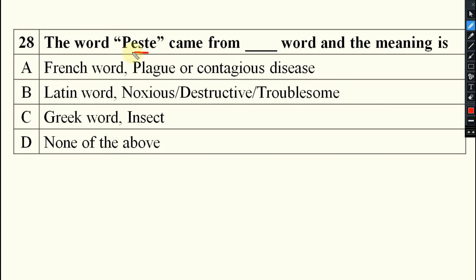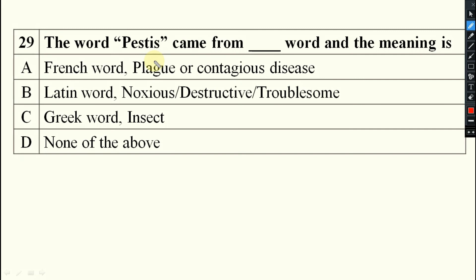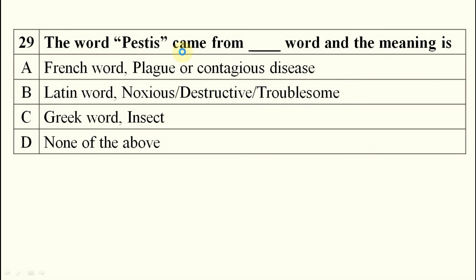The word 'pest' came from a French word, meaning plague or a contagious disease. The word 'pest' also came from a Latin word, where the meaning is noxious, destructive, or troublesome organism.